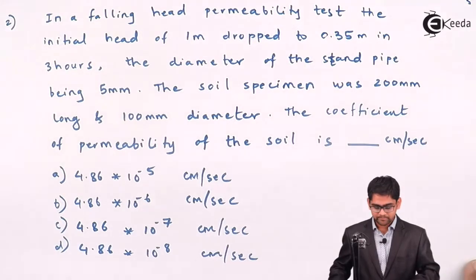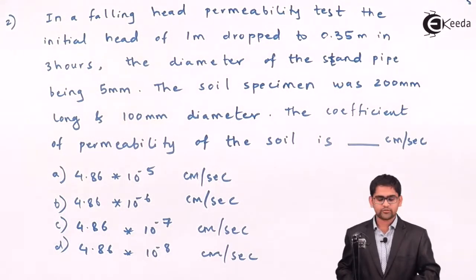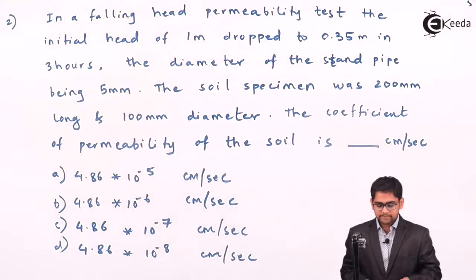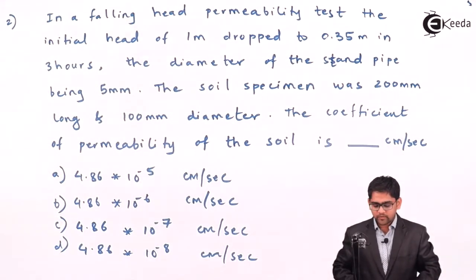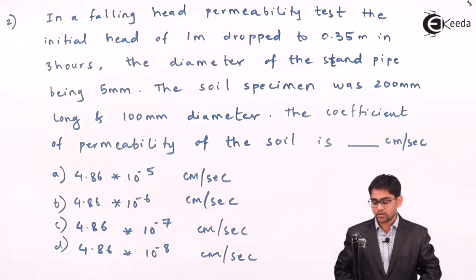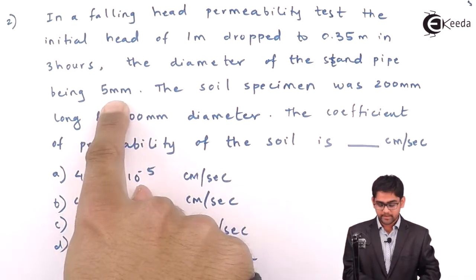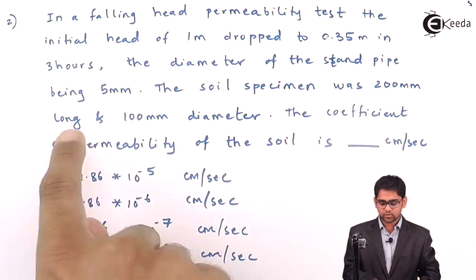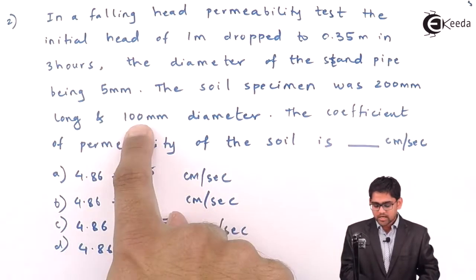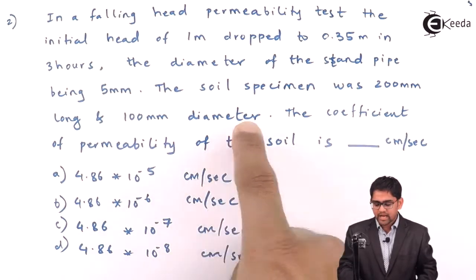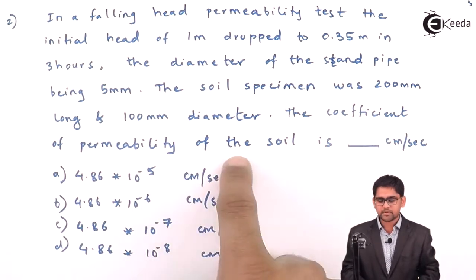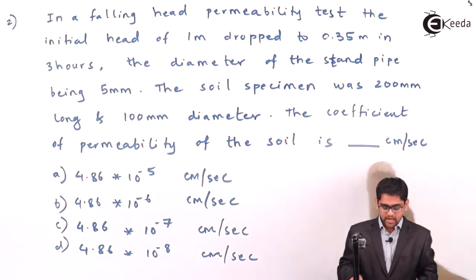We will move ahead with the second problem, which is related to the falling head permeability test. In a falling head permeability test, the initial head of 1 meter is dropped down to 0.35 meters in 3 hours, and the diameter of the standpipe is 5 mm. The soil specimen is 200 mm long and 100 mm diameter. We are asked to calculate the coefficient of permeability of soil in cm per second.